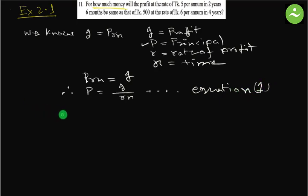Now if we put the value of i, r and n in this equation, we get the value of p. r is 5 percent, means 5 by 100. And n is 2 years 6 months, means 2 and a half years equals to 5 by 2 years.